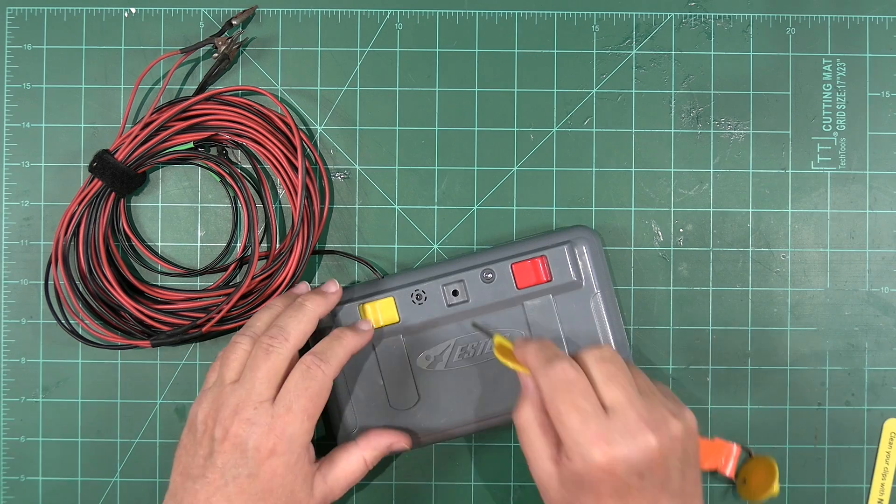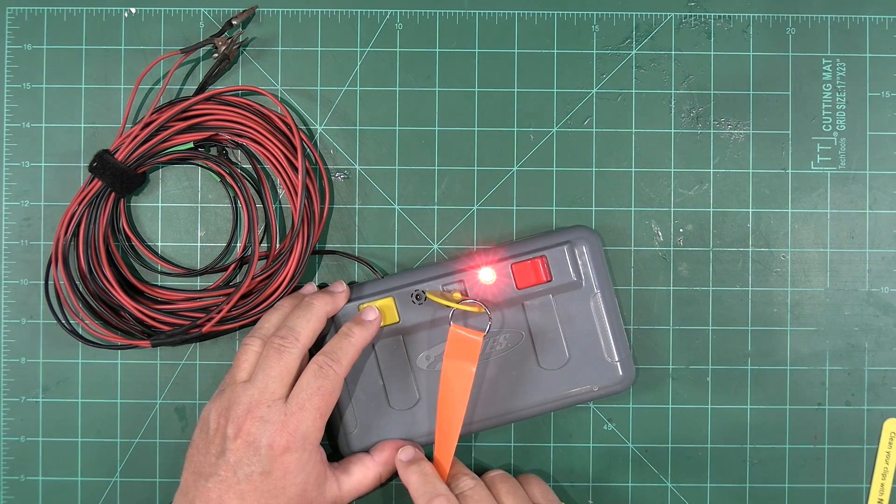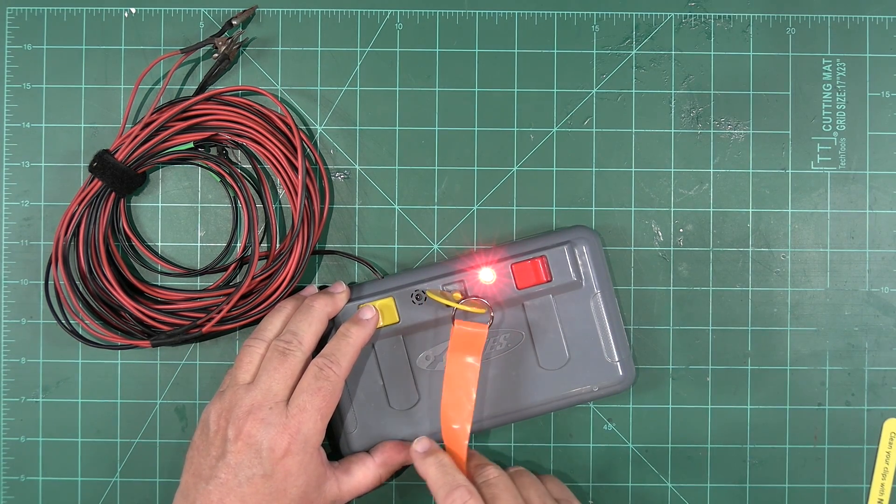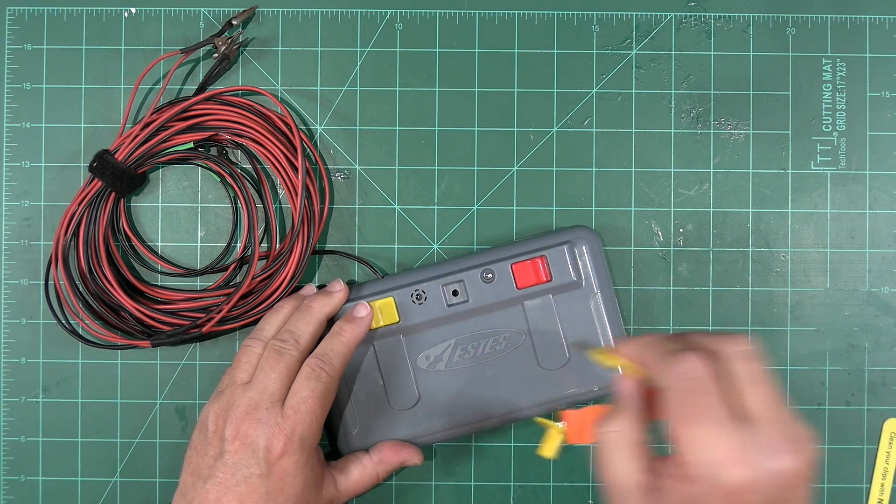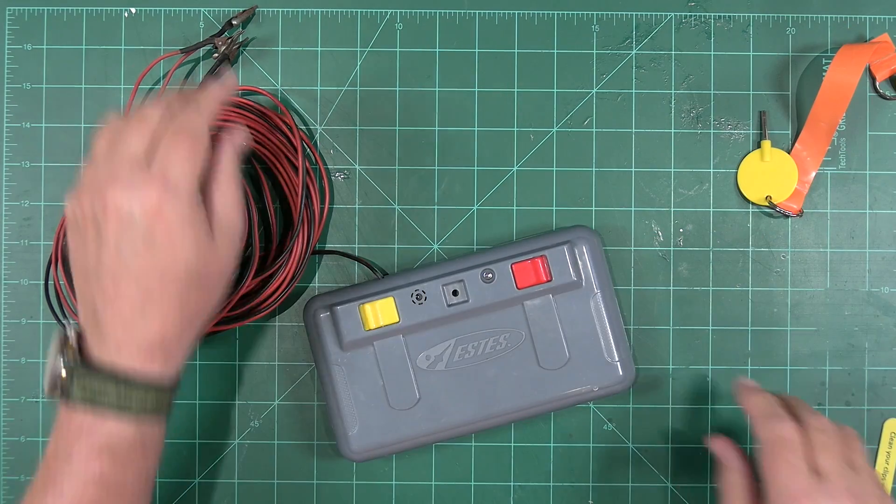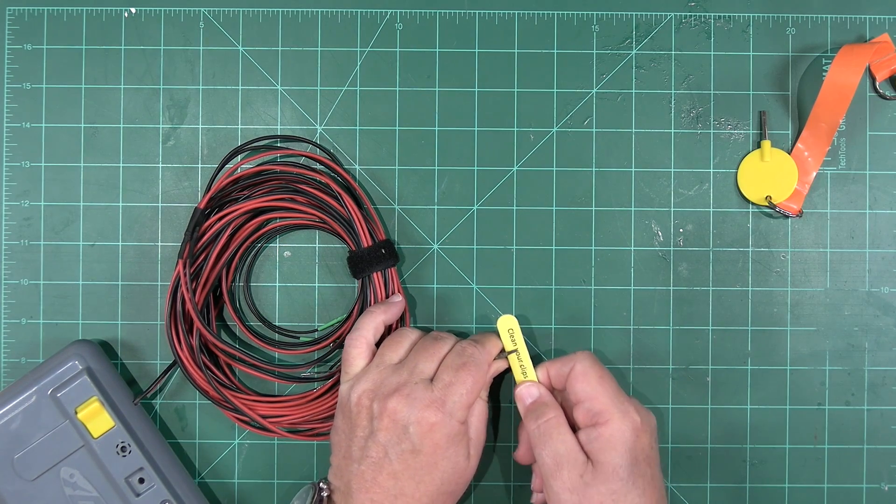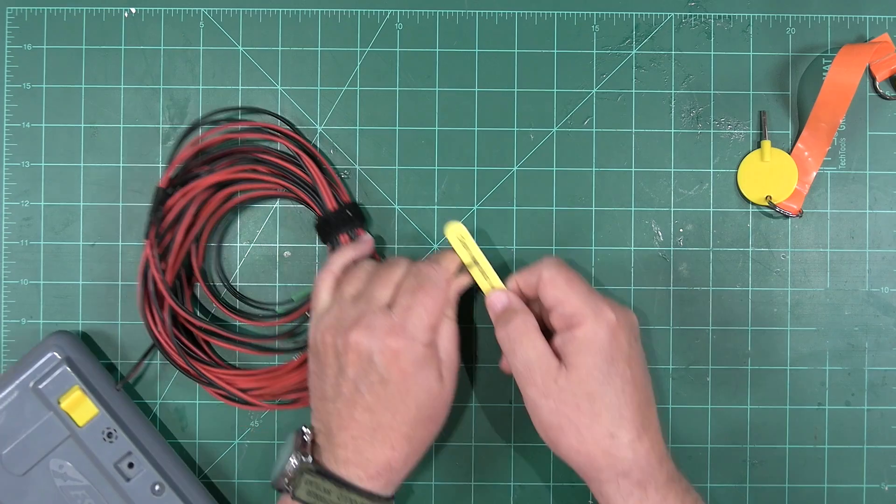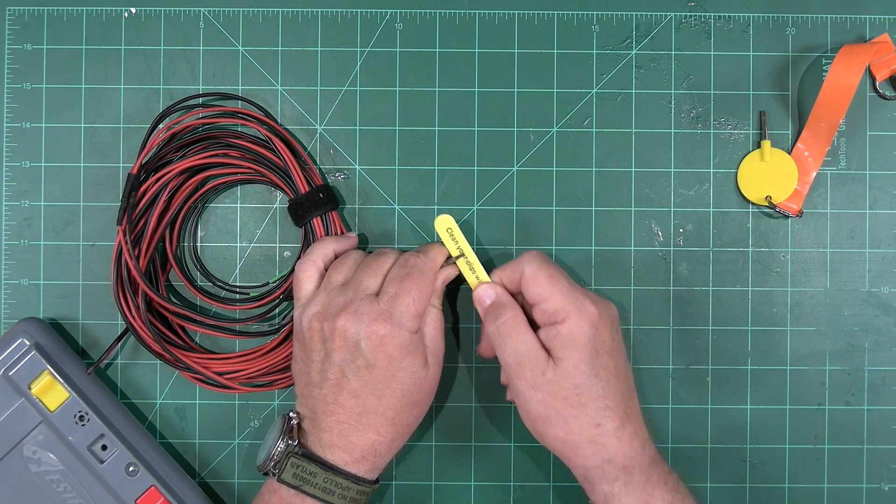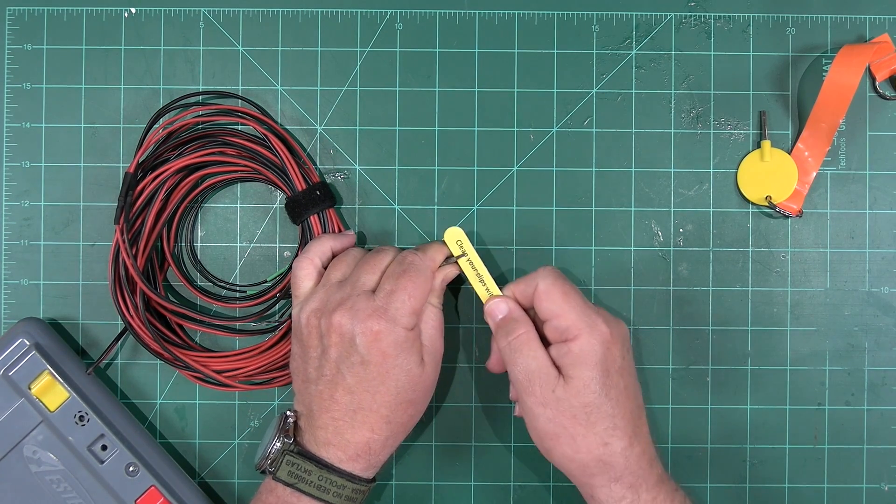There's still a couple things we can do to reduce the possibility of a misfire. First, we're going to make sure that our launch system has fresh batteries before we head out to the launch site. Also, we're going to make sure that our igniter clips are clean and free from corrosion or launch debris. A small piece of sandpaper or an emery board is great for that.